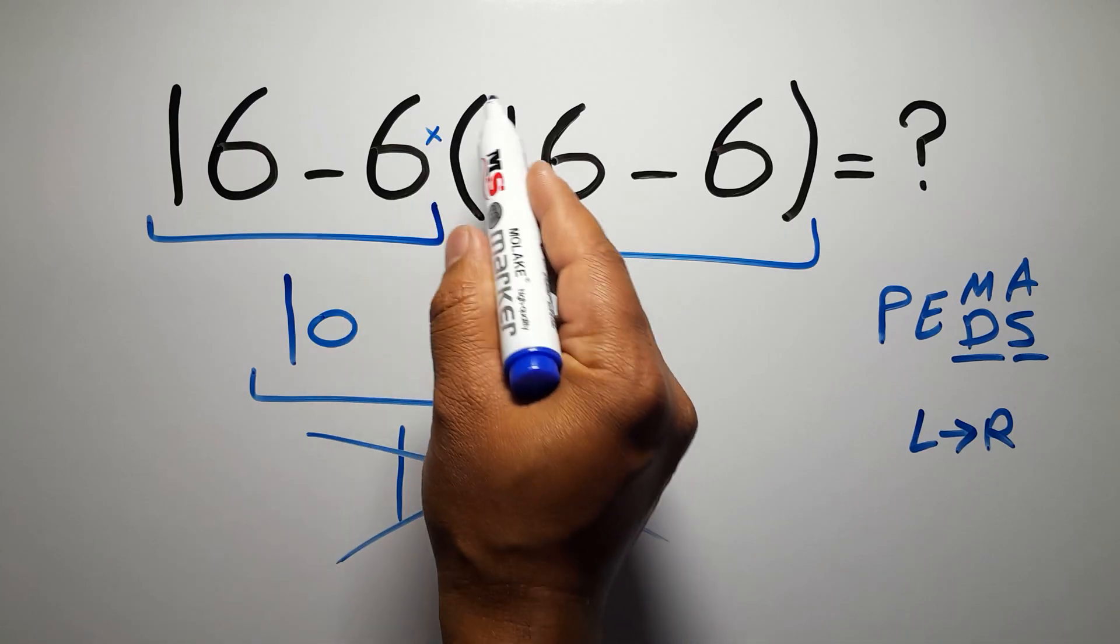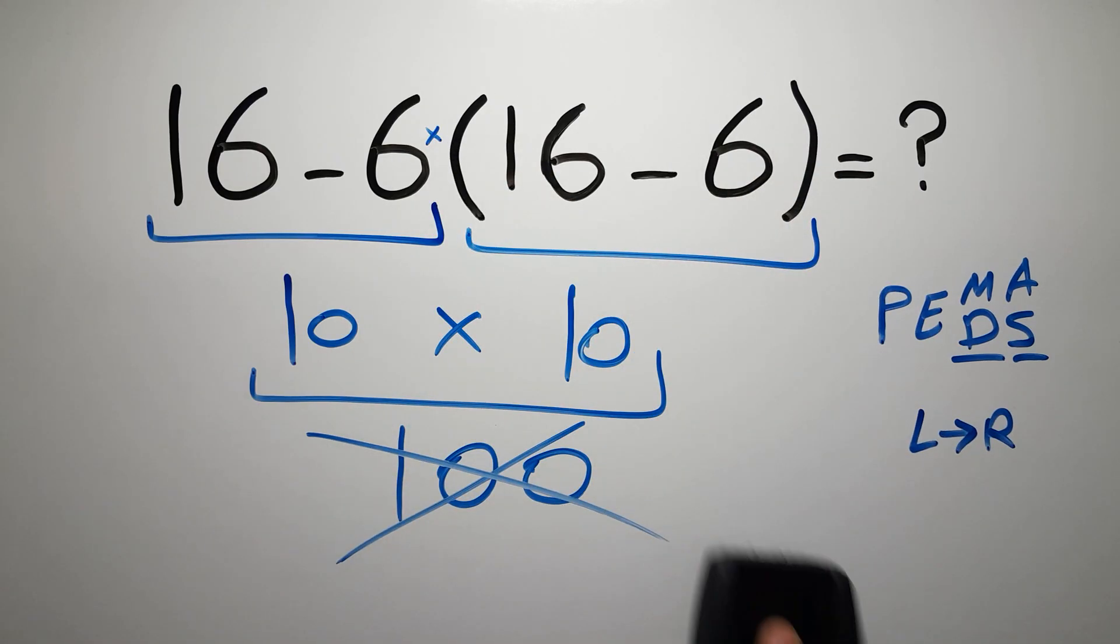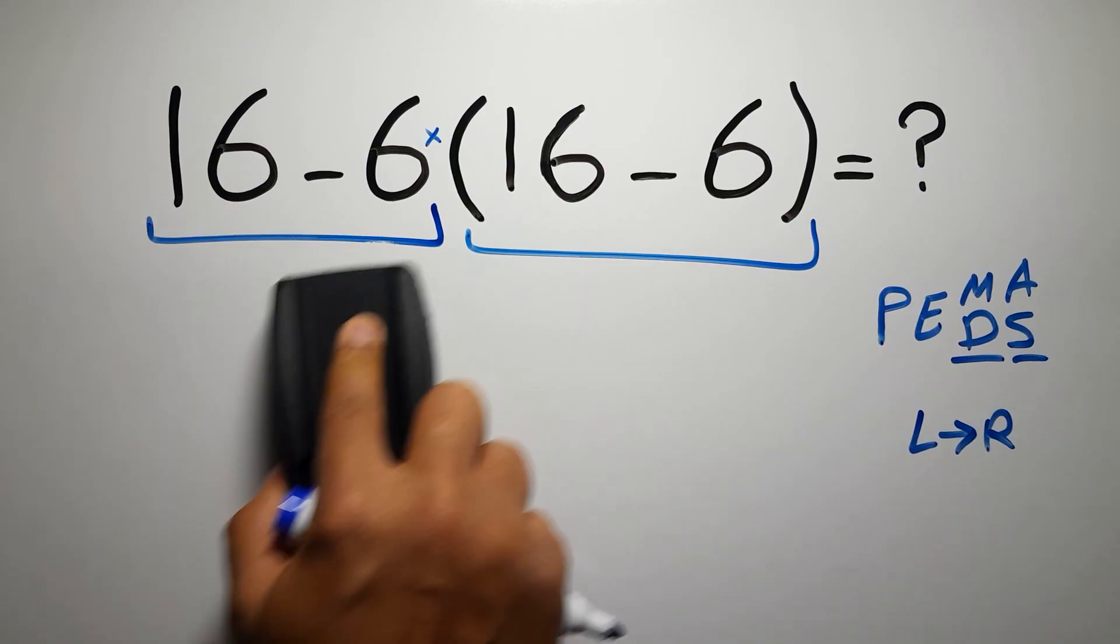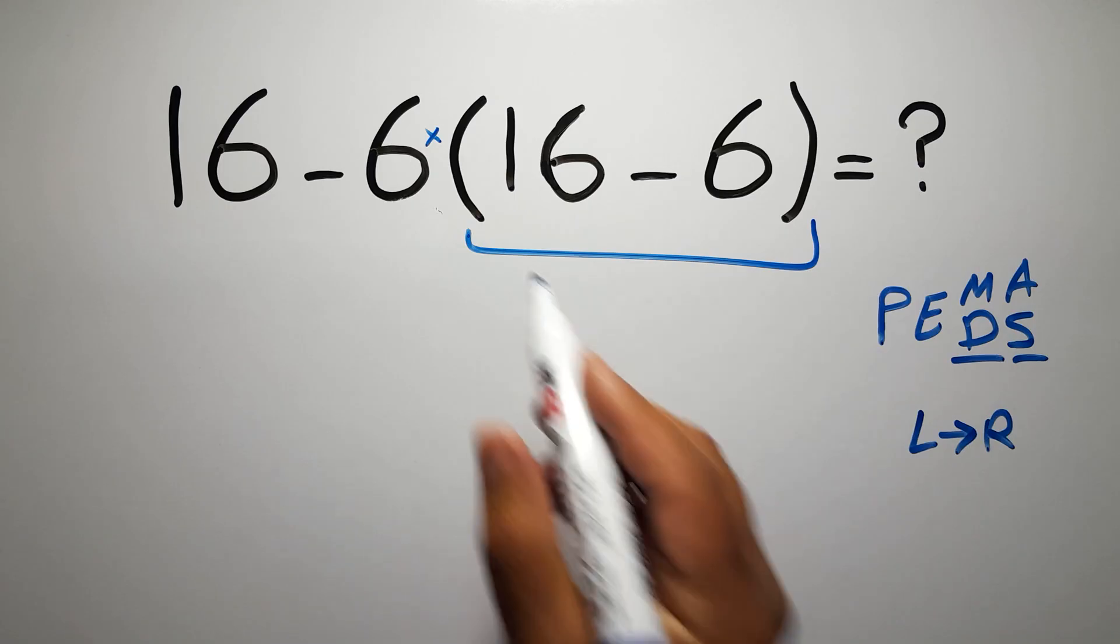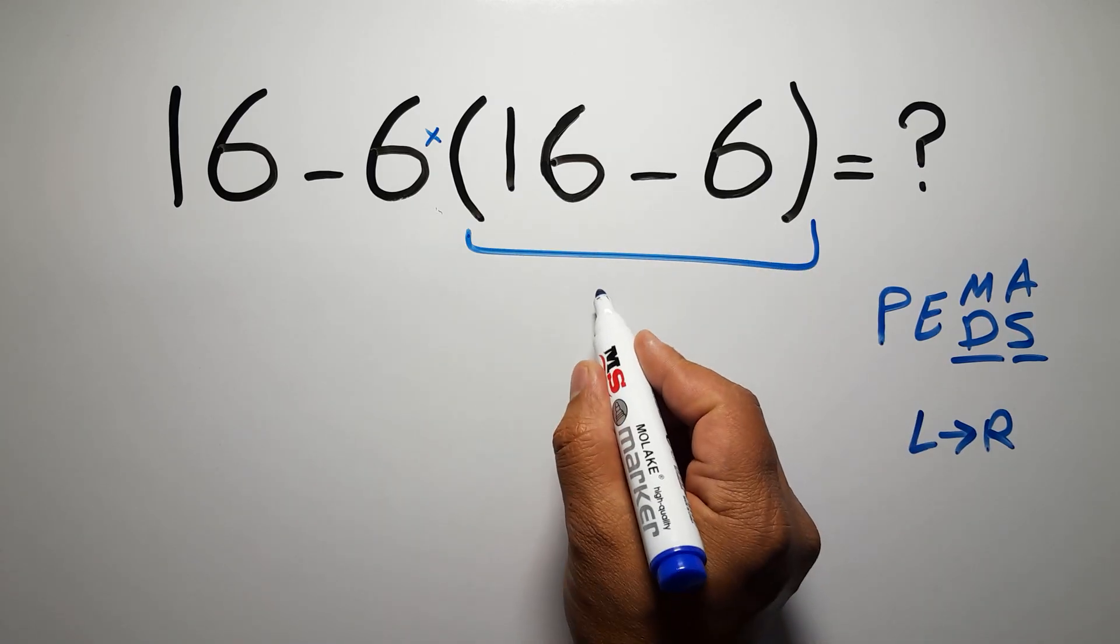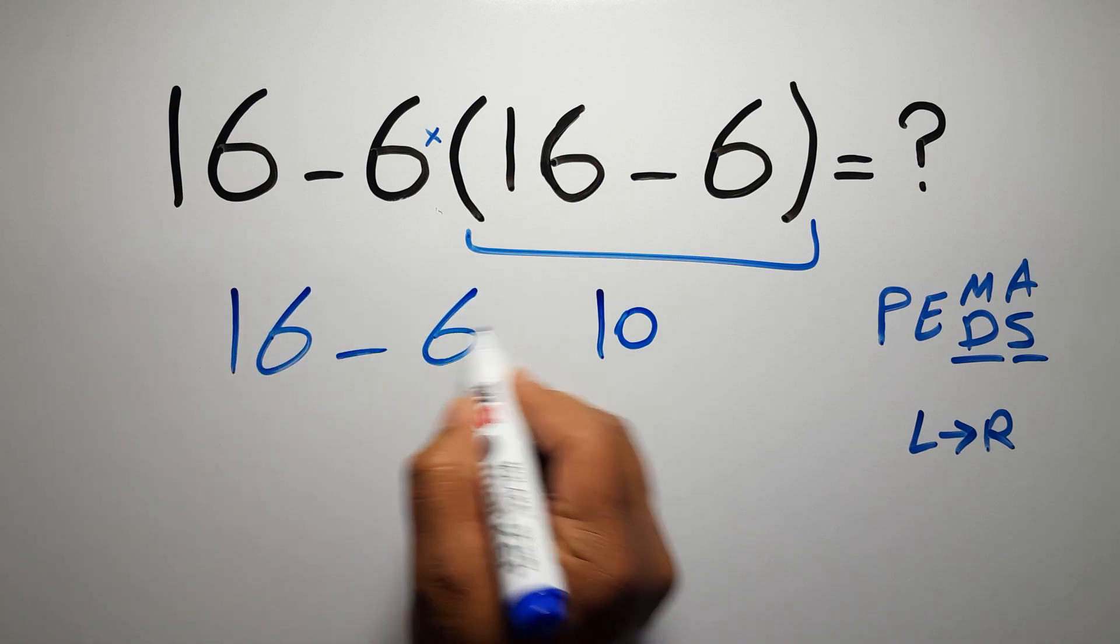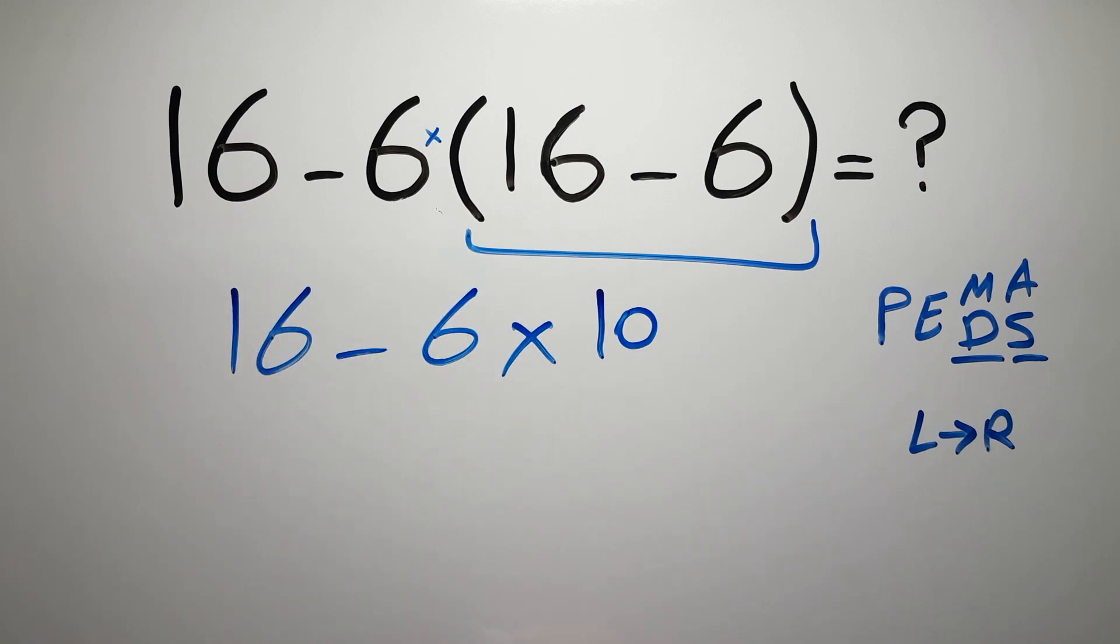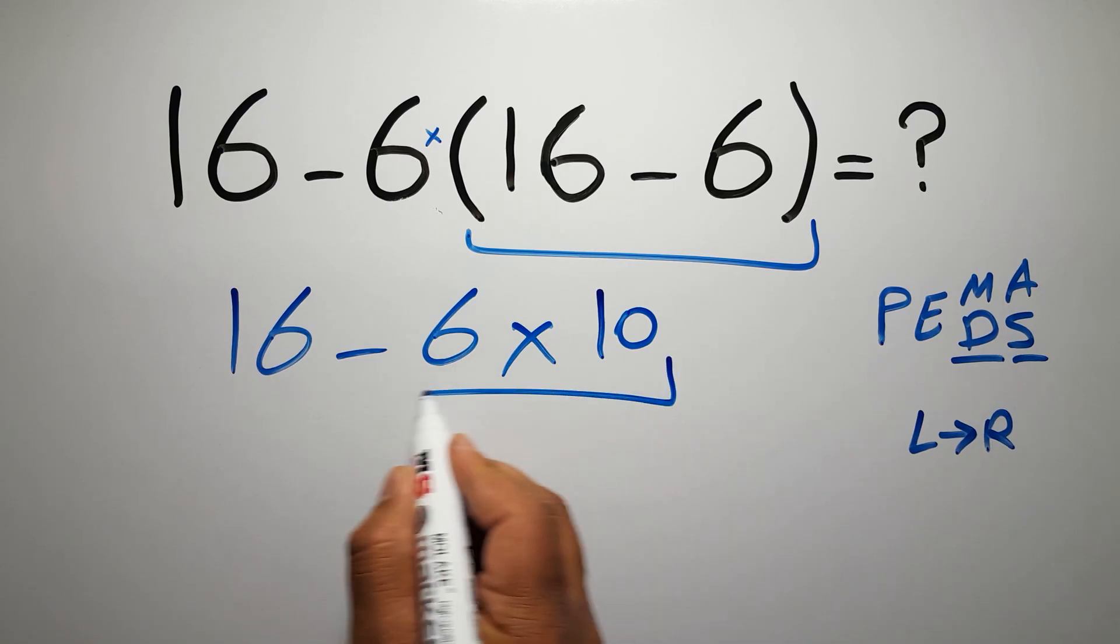Inside these parentheses we have 16 minus 6, which equals 10. So 16 minus 6 times 10. Now we have to do this multiplication. 6 times 10 is just 60.